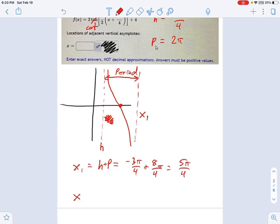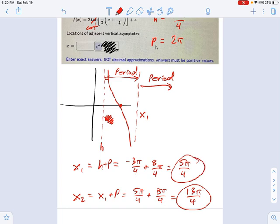And the second asymptote, you guessed it, it's going to be one more period to the right. So that's going to be equal to x₁ plus the period, which is 5π over 4, plus the period of 8π over 4, which means 13π over 4. So that's how you deal with a cotangent function.